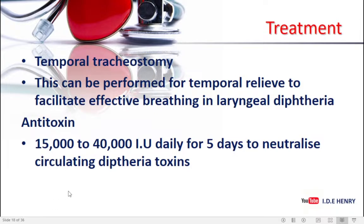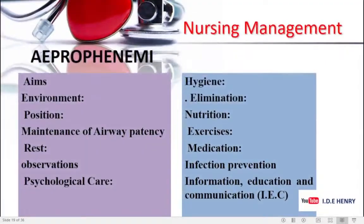That being the case, we can now go to our nursing care. That's where we find our APROPHENEMI. The APROPHENEMI has got the following aims: environment, position, maintenance of airway patency — because in this one the airway is affected. Then you can talk about rest, observation, psychological care, hygiene, elimination, nutrition, exercises, medication, infection prevention, and IEC.